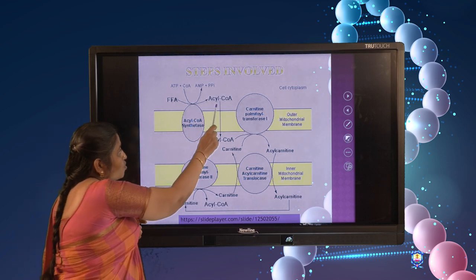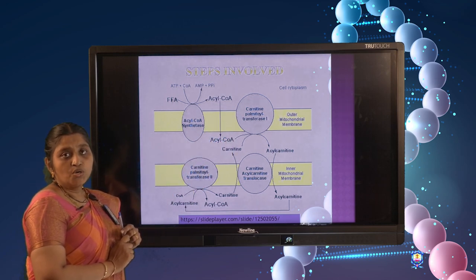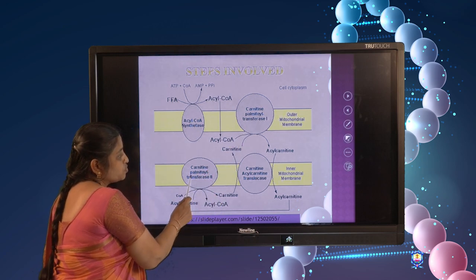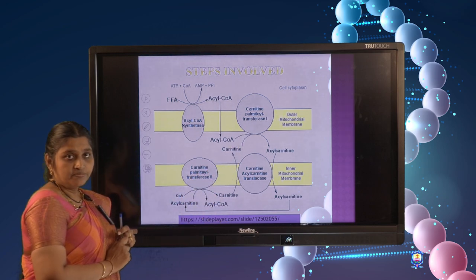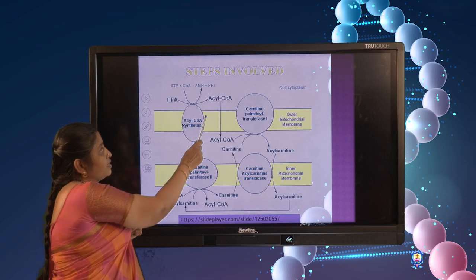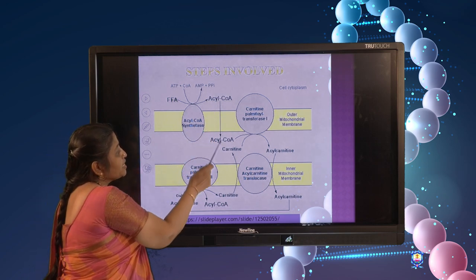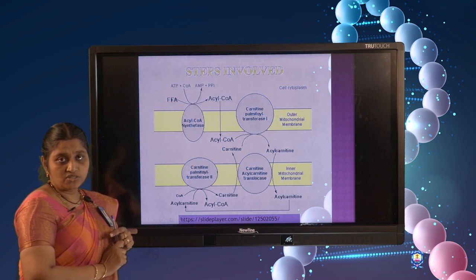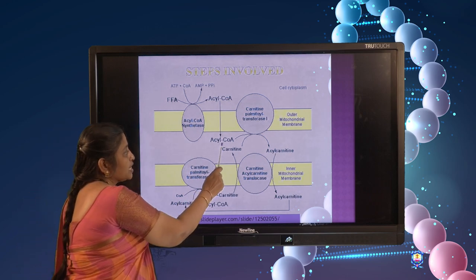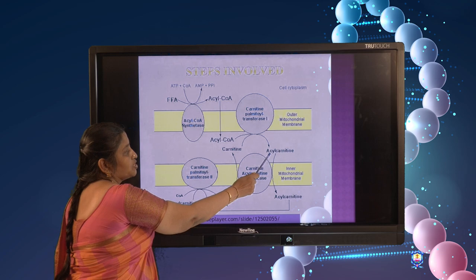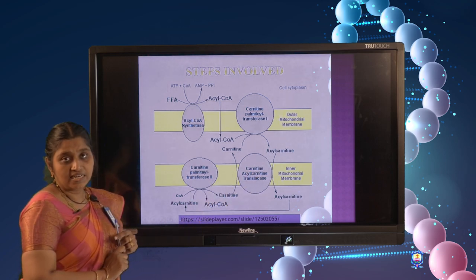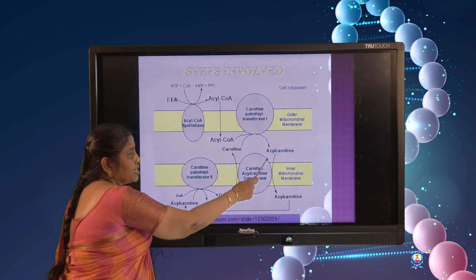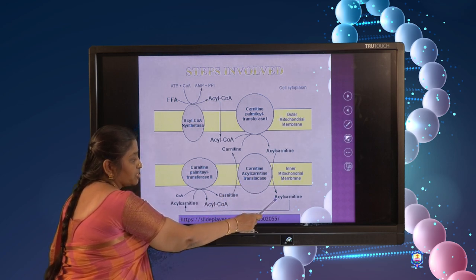Long chain acyl-CoA takes the help of the carnitine shuttle mechanism involving CPT1, CPT2, and the translocase enzyme. First, acyl-CoA combines with carnitine, the transporter protein located in the cytosol, and gets converted into acyl-carnitine. This acyl-carnitine is then translocated into the mitochondrial matrix with the help of the translocase enzyme.